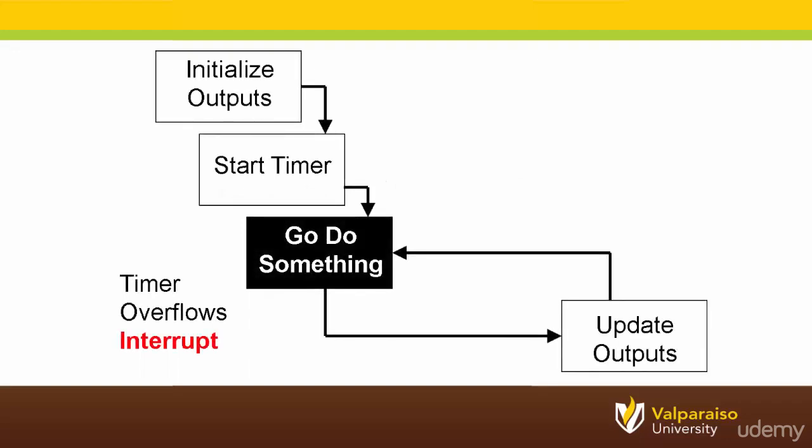In our last section, we learned how interrupt service routines can be incorporated into a program. For example, in this flowchart, once the program has initialized the output pin and started the timer, it can go do some other task.